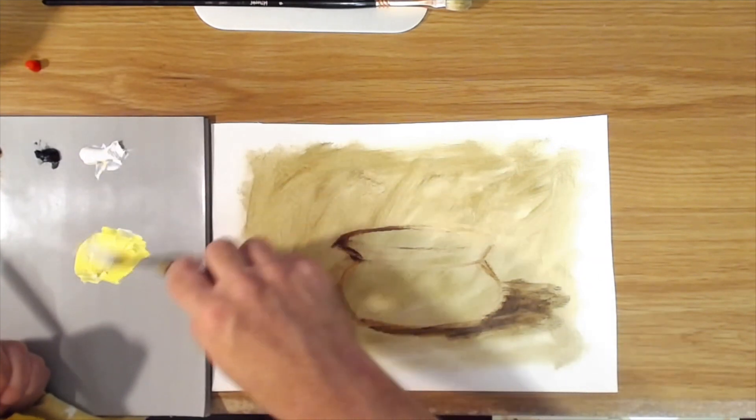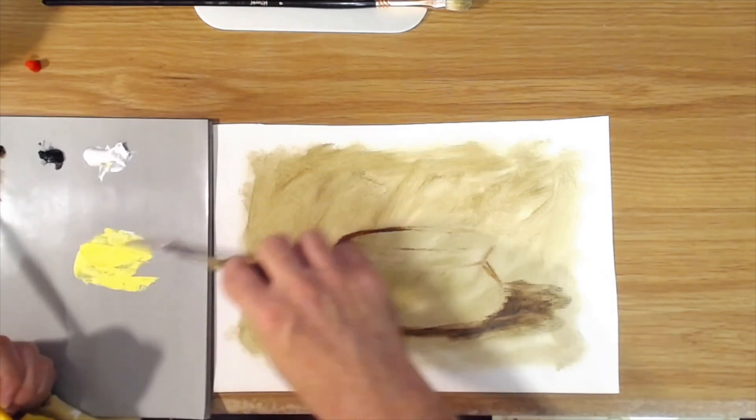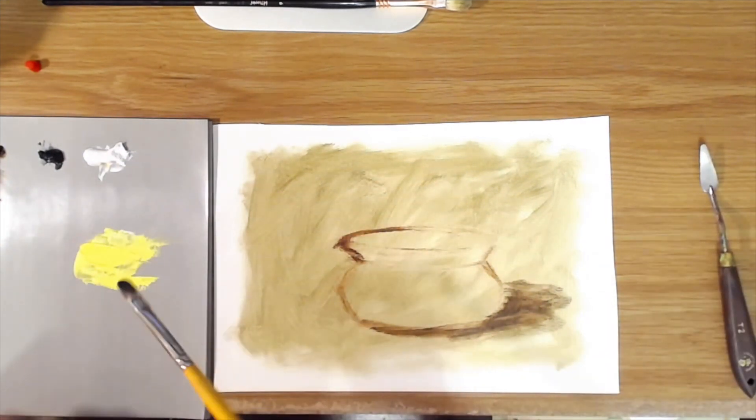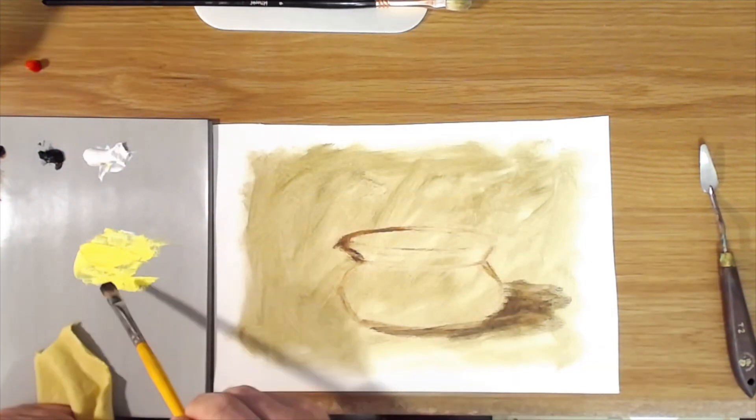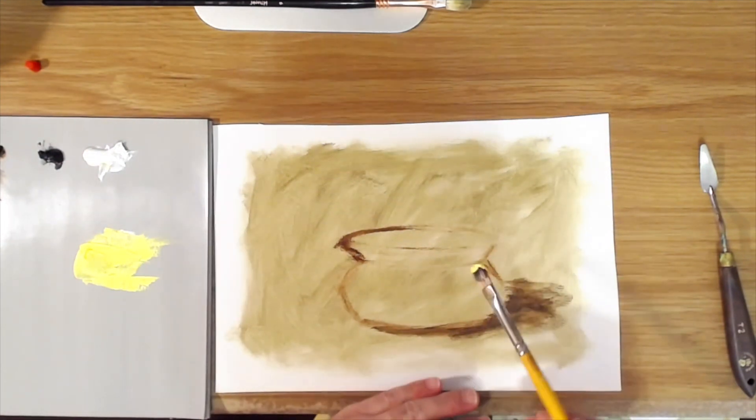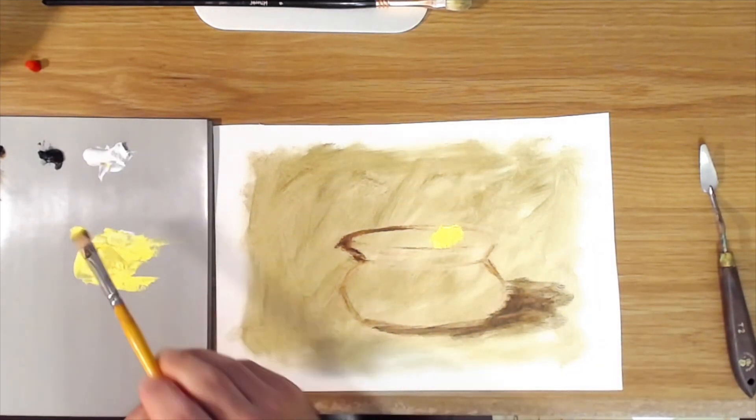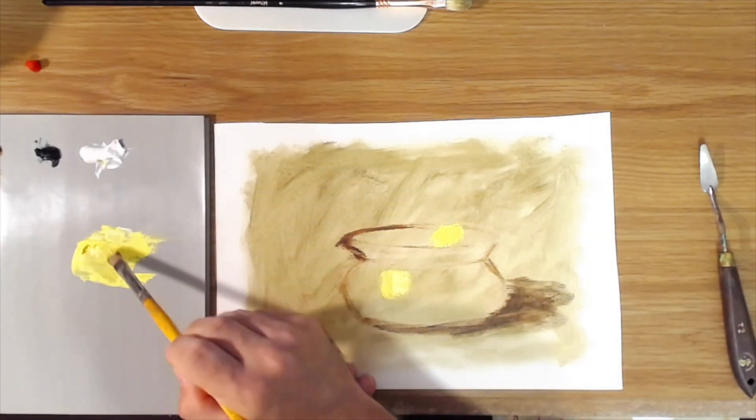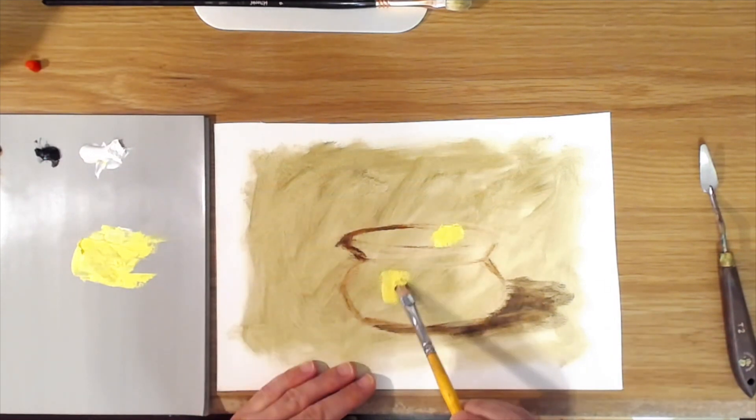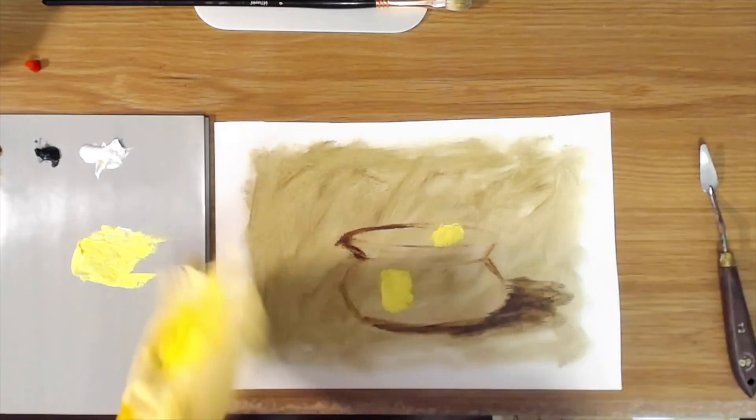I'm mixing up white and cadmium yellow light here, and then I want to get a little bit of this on my brush and just put that in the area where I see the highlights, putting it in sort of thick like that. Now we can come back and shape those with a darker color.